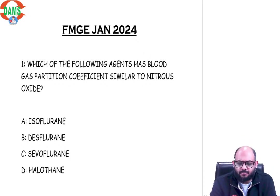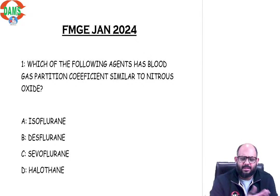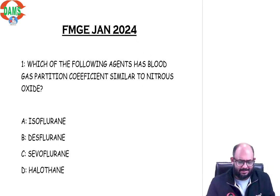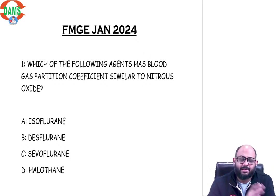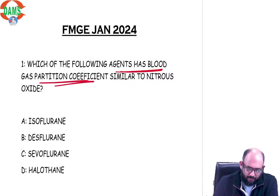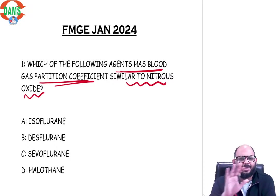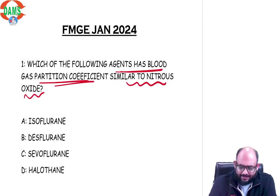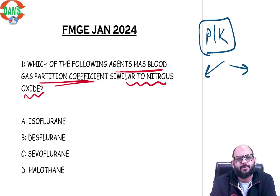As we expect, anesthesia questions are always supposed to be very easy — something that we have discussed both in our class as well as in the DFX. So all three questions came from a very expected portion of anesthesia. Let's start with the first question: which of the following agents has blood gas partition coefficients similar to nitrous oxide? Now this is a correlated question. We have discussed the pharmacokinetics of inhaled anesthetic agents.